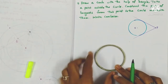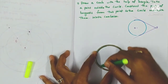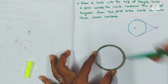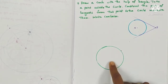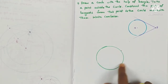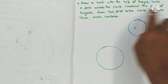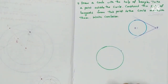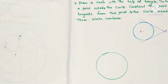First I took the bangle and I am drawing a circle with the help of this bangle. Now we don't know the center here. If we know the center we can take a point outside the circle, but first of all we want to locate the center.